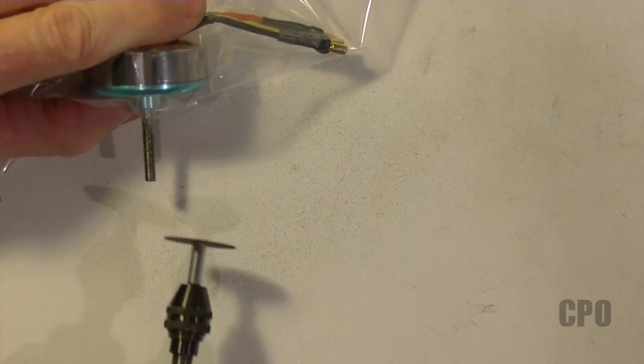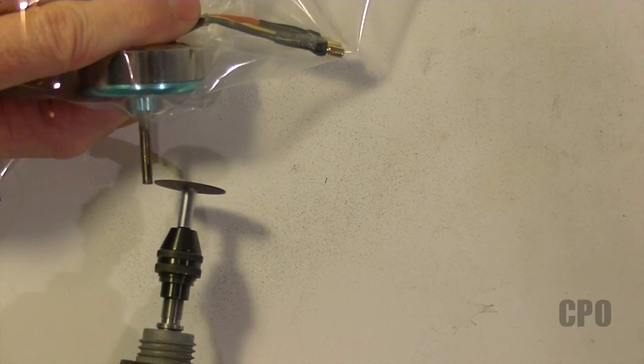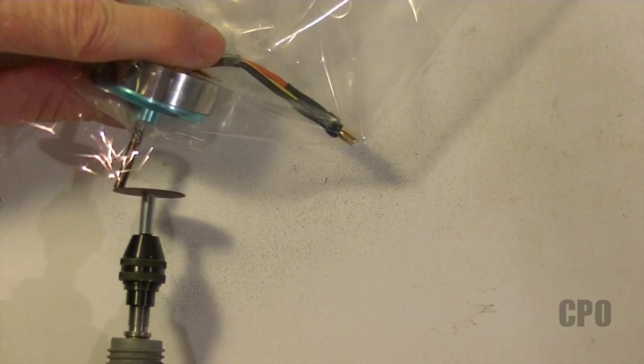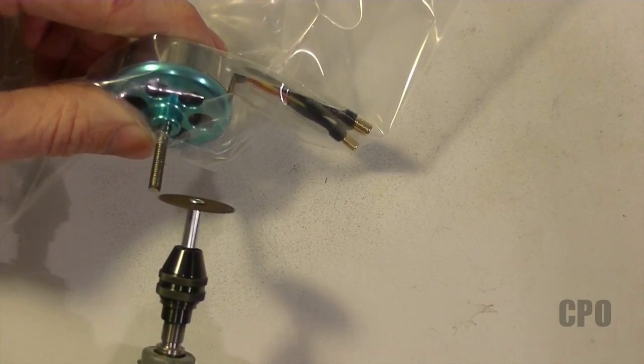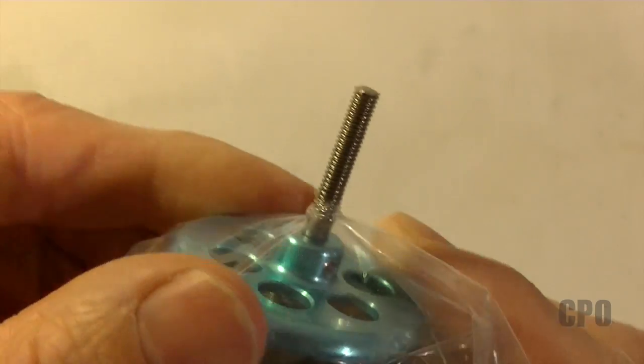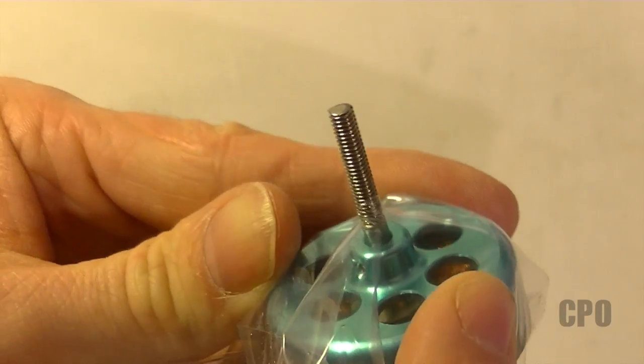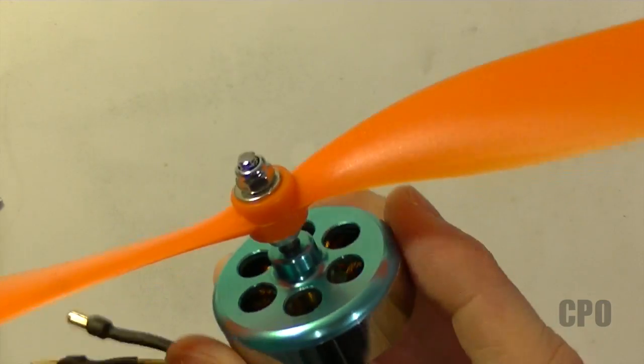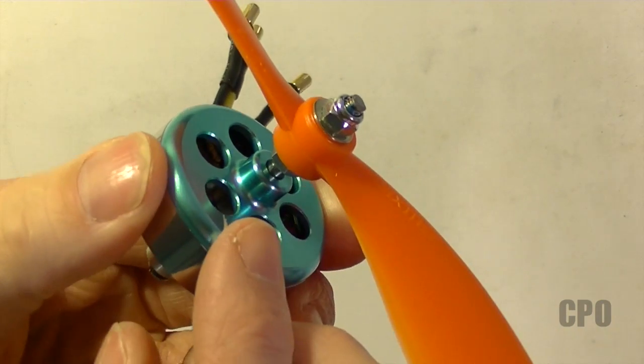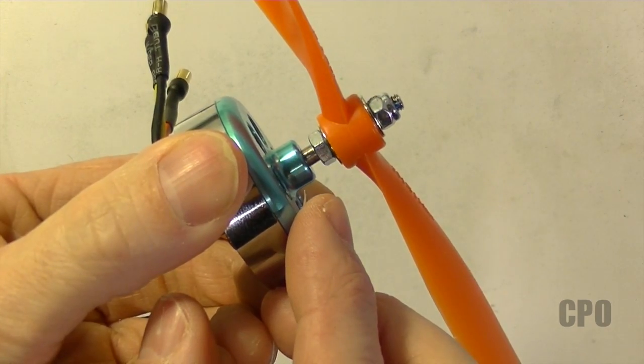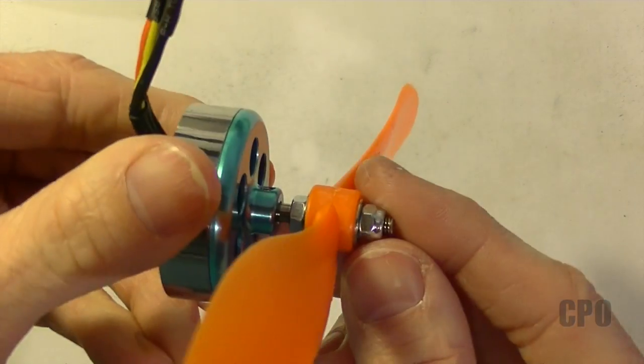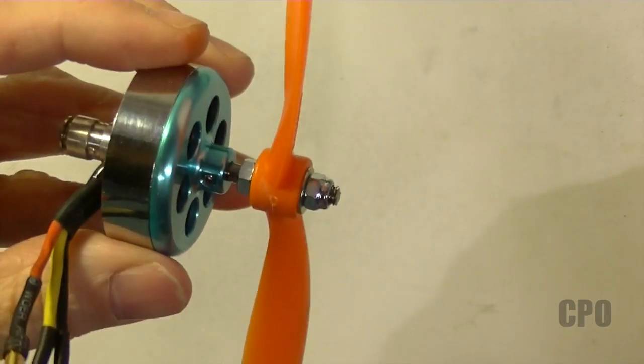I'm just using a Dremel with a cut off wheel and then of course rounding off the top edge there just to keep it from being sharp. I finished the cutting on the other motors and then test fit one of the props on the rear motor since this is the orange prop. And I think everything looks nice. I will be using thread lock on that bottom nut once I do the final assembly.